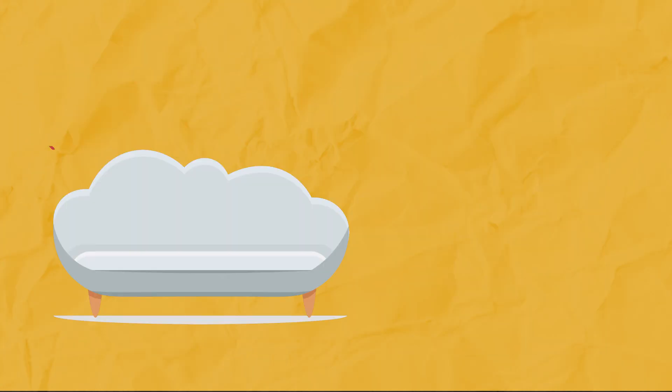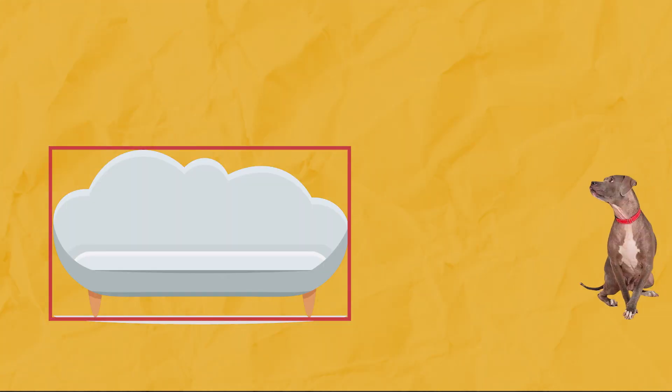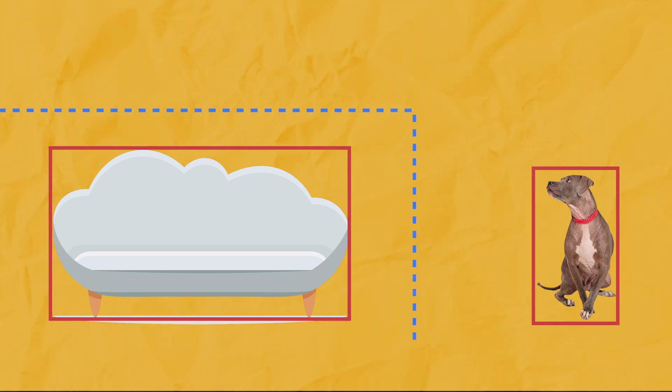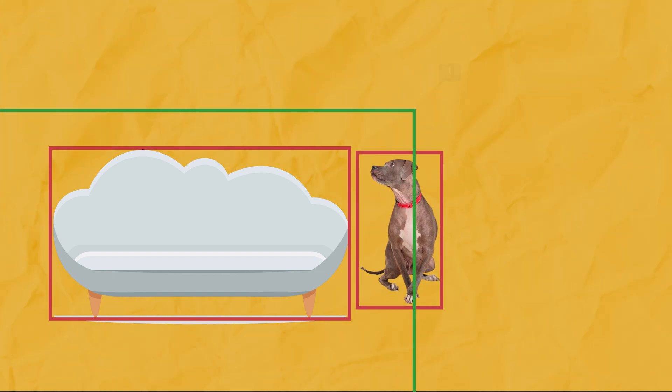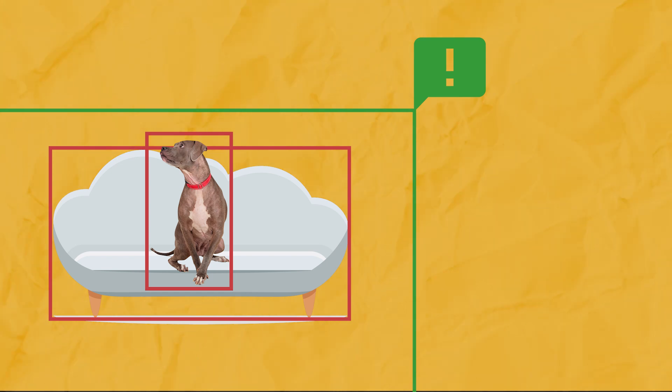When we've detected that the user has placed the device in view of the object they want to monitor, we continuously check the video stream to see if a chosen pet ever gets close to that object. To do that, we calculate the distance between their bounding boxes. If the distance is less than some threshold, we send an alert to our backend to send a notification. We also added logic to avoid spamming the user with too many notifications in case the dog comes in and out of frame continuously — you can learn all about that in our blog post linked in the description.